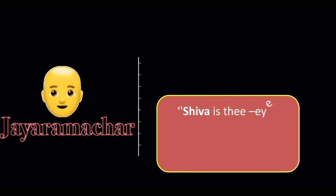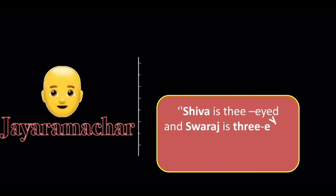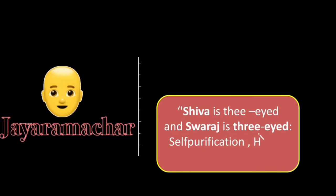The three eyes of Swaraj are: self-purification, Hindu-Muslim unity, and Khadi. Swaraj means self-rule — 'Swa' means self and 'Raj' means rule — and Jairamachar says Gandhi will come to liberate the people of India. This is how Jairamachar, the Harikatha man, mixes politics with religion.